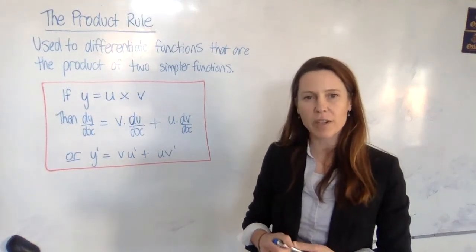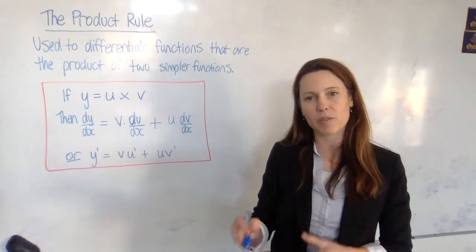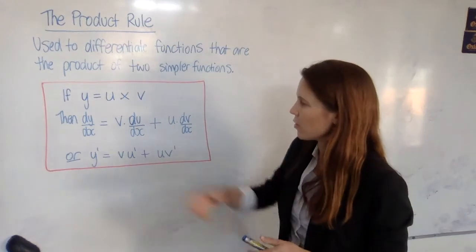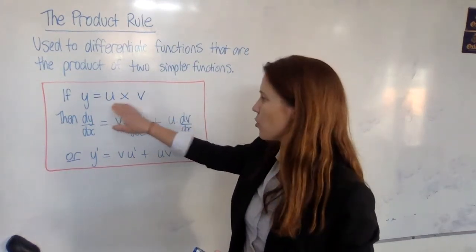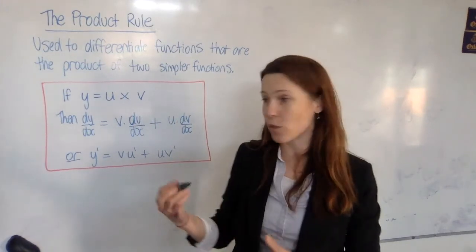The product rule is used to differentiate functions that are actually the product of two simpler functions. So we say if y equals u times v, and we define the two parts that are multiplied by each other as u and v.